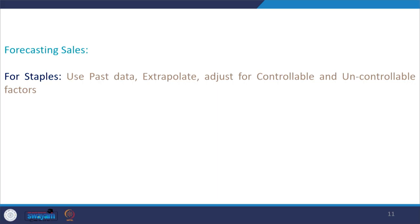Now that we understand staple, fashion, and seasonal merchandise, we need to understand how to forecast their sales. For staples, readily available historical data is extrapolated. However, we need to check for data quality and reliability, and also make adjustments for controllable and uncontrollable factors.